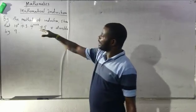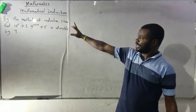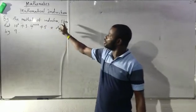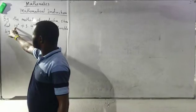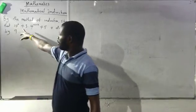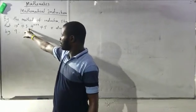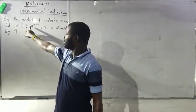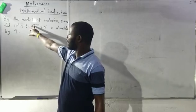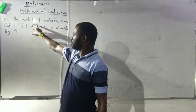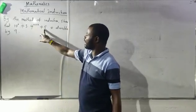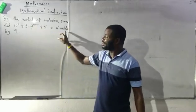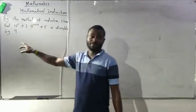By the method of induction, show that 10 raised to the power n plus 3 dot 4 raised to the power n plus 2, plus 5, is divisible by 9.